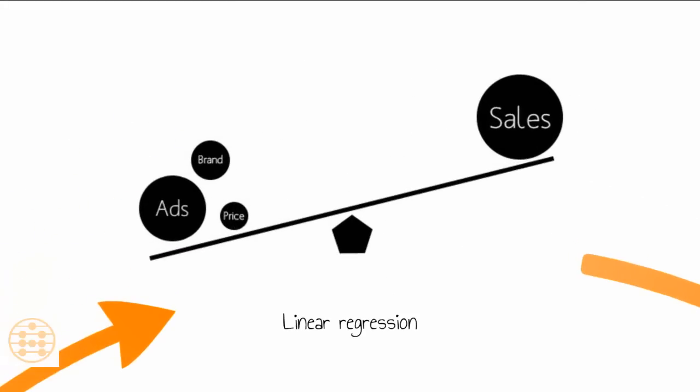This leads us into the basics of predictive modeling. The first such technique is the linear regression. The linear regression is used when we want to compute a number like sales, or it could be the price of a house.